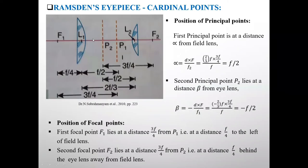In this diagram Ramsden's eyepiece is shown and position of cardinal points is also shown. We will see first position of principal points P1 and P2.